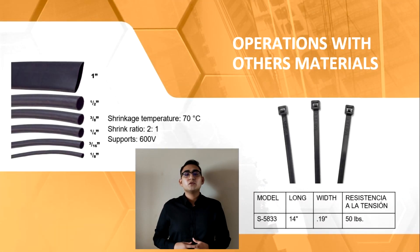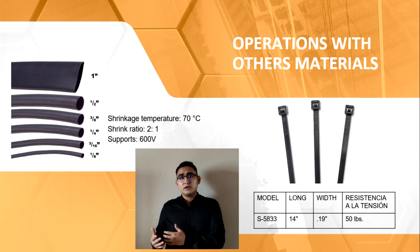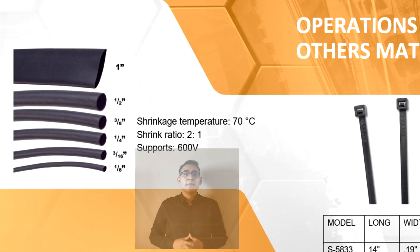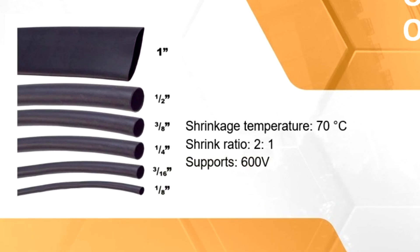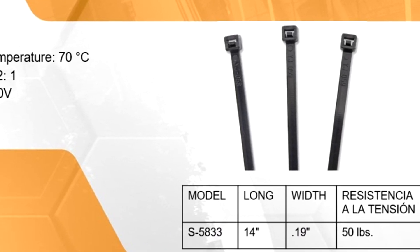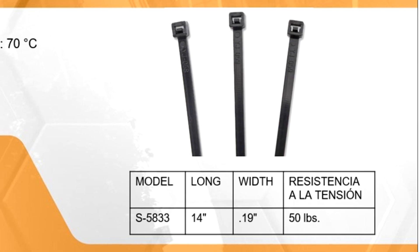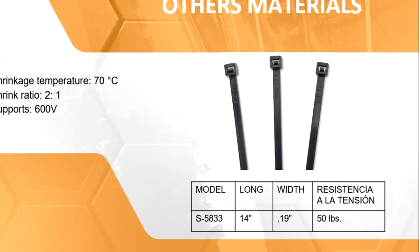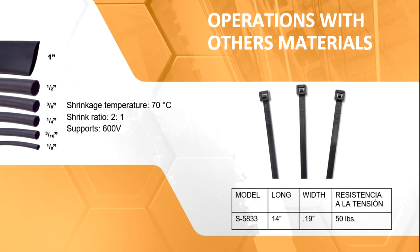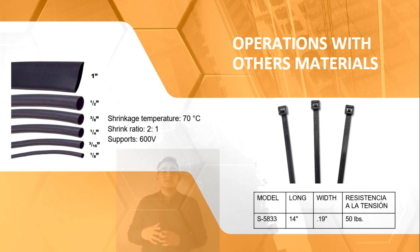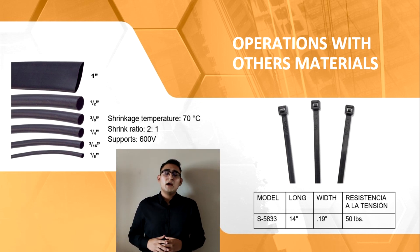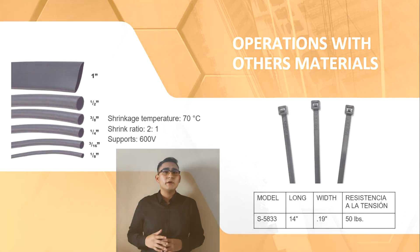The operation with other materials only involves protection of the equipment, which are plastics. The first one is heat-shrink tubing (thermofit), which is used to protect and hold cables together. The second one is cable ties (bolts), whose only function is to hold the cables fixed in a specific place. Both protections withstand high temperatures and high voltages, supporting 70 degrees Celsius and up to 600 volts.